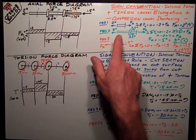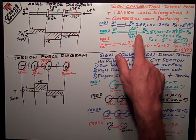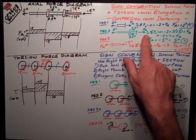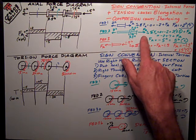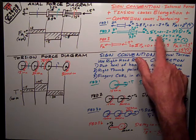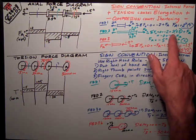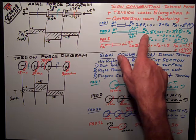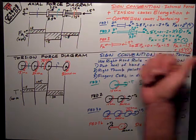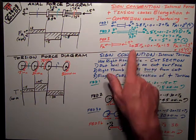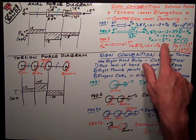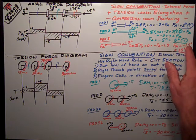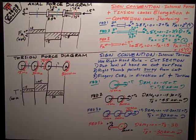Moving to section 2, I have a free body diagram with the external forces and my assumed positive tension internal force FA. Summing forces in the x direction with positive to the right: negative 2 plus 2 times 3.5 plus FA equals 0. Rearranging, FA equals negative 5 kips. The negative means my assumption of tension was wrong — I've really got 5 kips of compression at section 2 between those two collars.